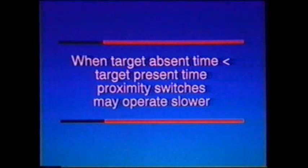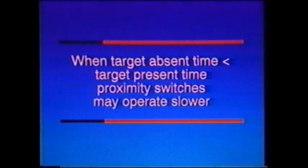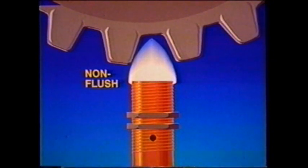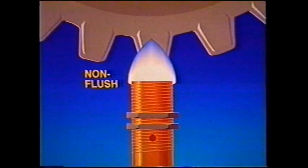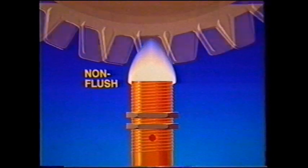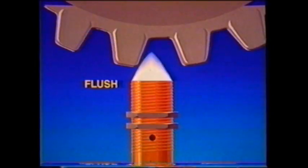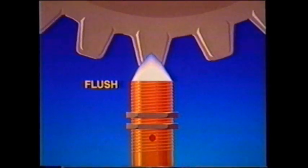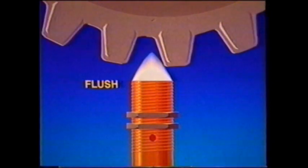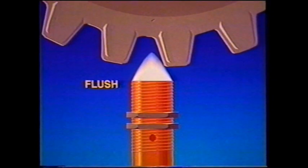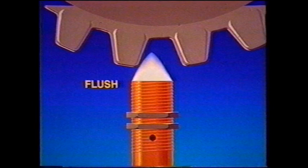The most difficult applications are rapidly moving repetitive targets with a small space between them. One common example is counting gear teeth using a non-flush switch — as a tooth leaves the active zone, the next tooth is about to enter, and chances are the switch will not have enough time to turn off. Using a flush switch in the same application, when the tooth leaves the zone, there is more time until the next tooth arrives because the zone is narrower, and the switch will probably have enough time to turn off. So if turn-off delay could be a problem, use a flush switch.